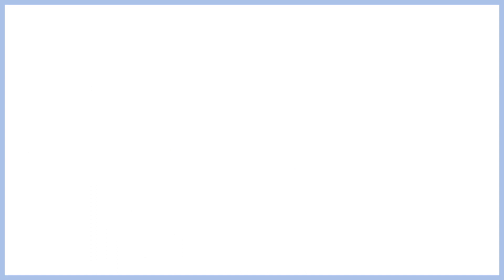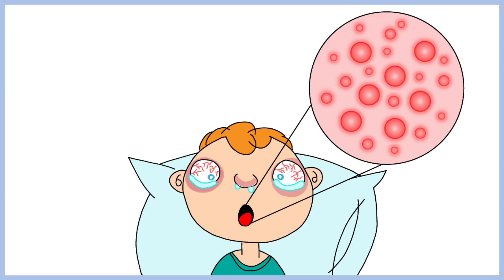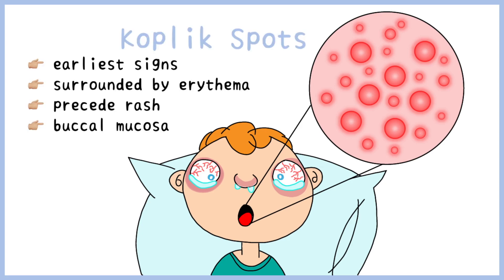The first sign of measles appears around 10–15 days after exposure to the virus. Koplik spots are tiny spots like grains of sand, found on a red erythematous background on the inner lining of the cheeks, also known as buccal mucosa. These spots always appear before the onset of rash.